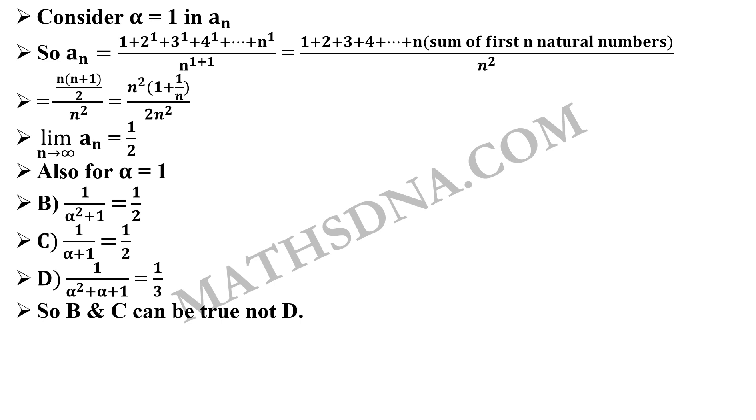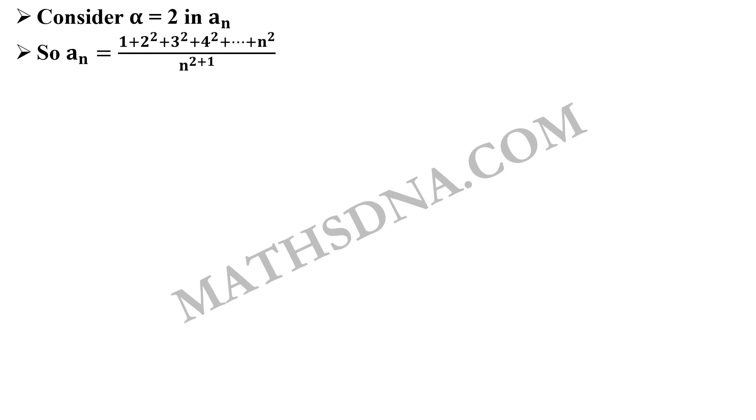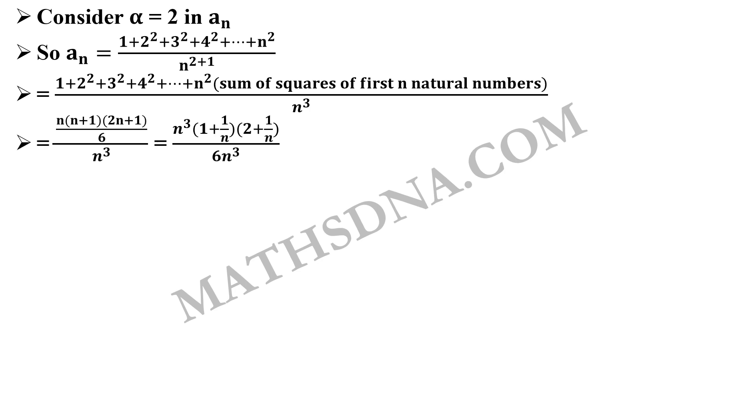So let us take alpha equals to 2 in a_n. This gives us a_n equals to 1 plus 2 square plus 3 square up to n square divided by n raised to 2 plus 1. Numerator is nothing but the sum of squares of first n natural numbers divided by n cube and we know the sum of squares of first n natural numbers is nothing but n into n plus 1 into 2n plus 1 divided by 6 whole divided by n cube which further simplifies to n cube into 1 plus 1 by n into 2 plus 1 by n divided by 6 n cube. Now if we apply the limit over here we get limit n tends to infinity a_n equals to 1 by 3 because there is 2 in the numerator and 6 in the denominator which simplifies to 1 by 3.